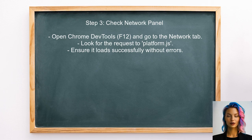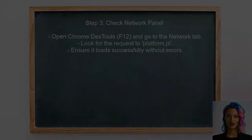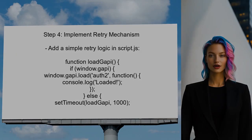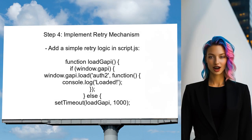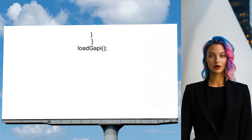Additionally, check the network panel in Chrome to confirm that the Google API script is being loaded without any issues. If there are network errors, you may need to troubleshoot your internet connection or check for any ad blockers. Finally, if the error persists, you can implement a retry mechanism in your script — this will attempt to load the gapi object again if it is not available initially.